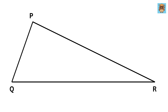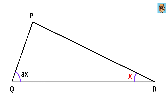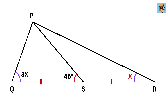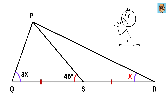We have a triangle PQR, such that angle PRQ is labeled as X, and angle PQR is labeled as 3 times X. Now we draw a line from point P which intersects side QR at point S, such that segment QS is equal to segment RS, and angle PSQ is 45 degrees. Using only this much information, our job is to find out the value of X.